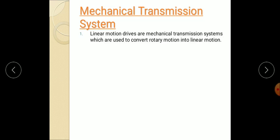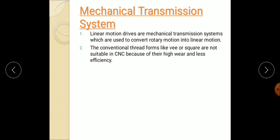Next, the mechanical transmission system. What is mechanical transmission system? It is a linear motion drive, which are used to convert rotary motion into the linear motion. The conventional thread forms like V or square are not suitable in CNC because of their high wear and less efficiency.